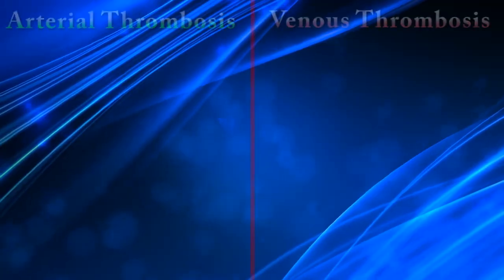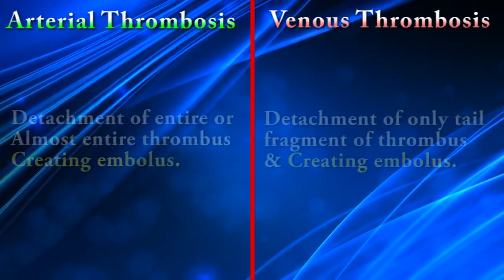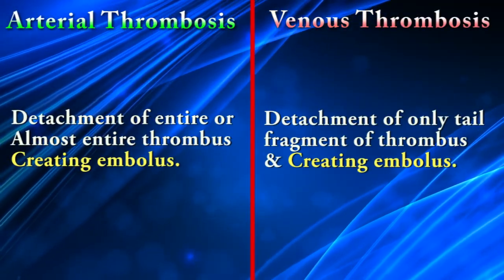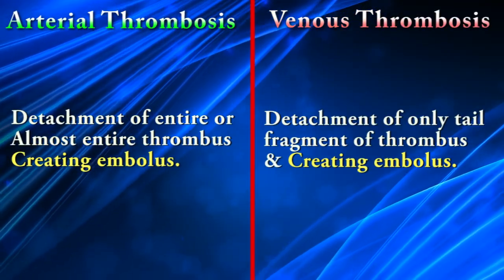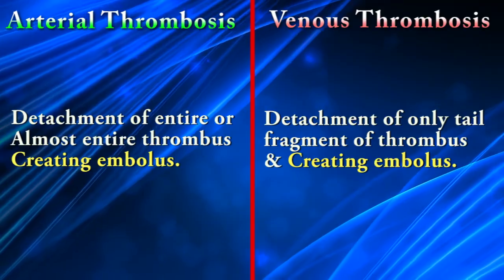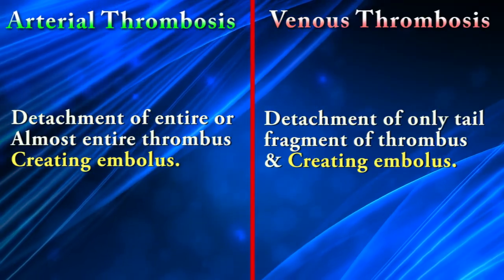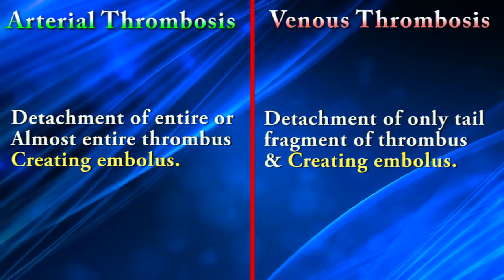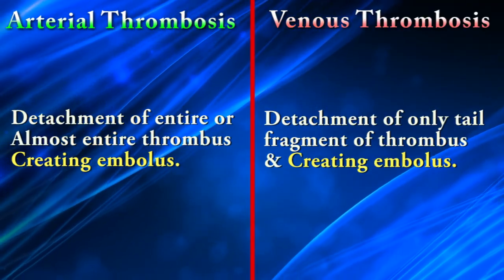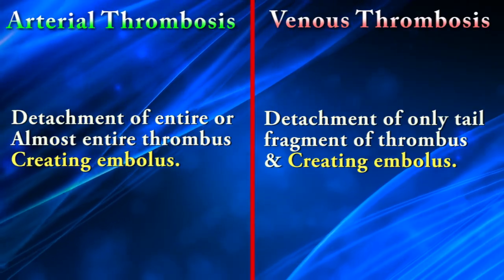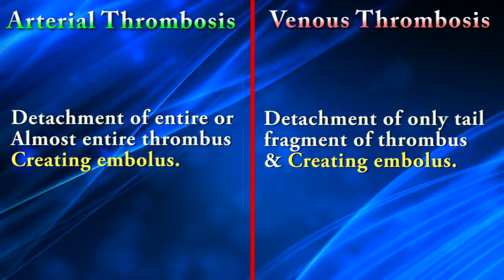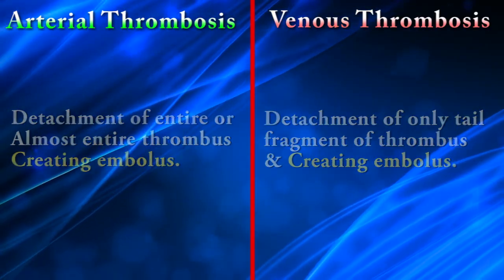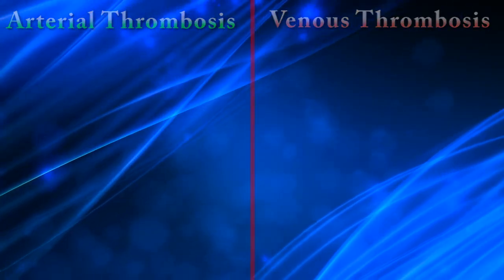In arterial thrombosis, the entire or almost entire thrombus detaches and creates an embolus. But in venous thrombosis, usually the loosely attached tail detaches, creating an embolus.